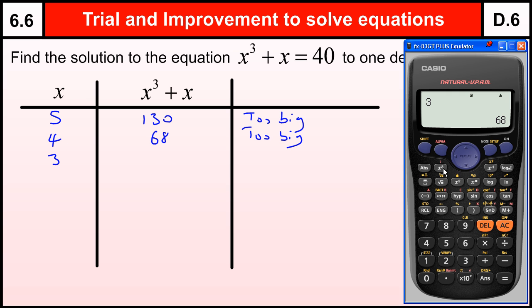3 cubed, and essentially this is what we're going to do for the whole thing. We're going to try lots of values until we get as close as we can. Now 3 is actually too small, so we know that the answer to this equation is between 3 and 4. It's not a whole number.